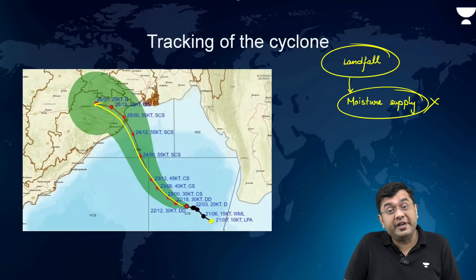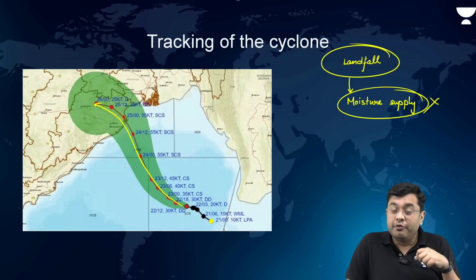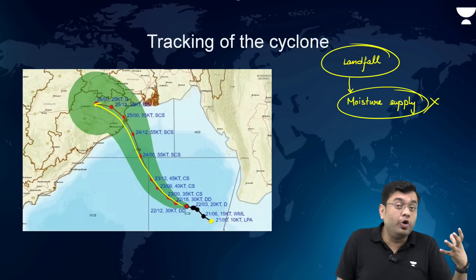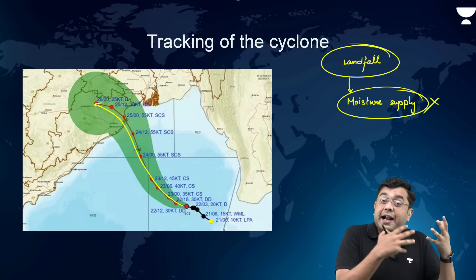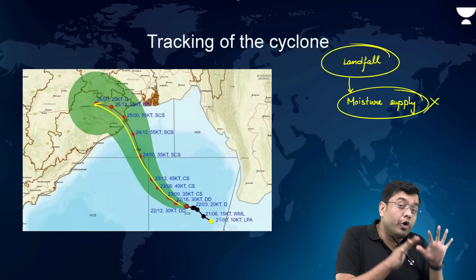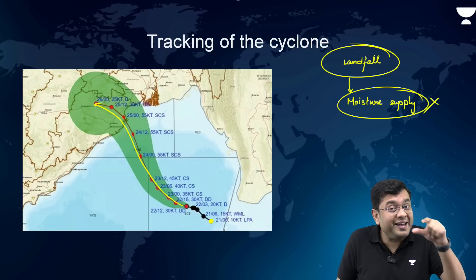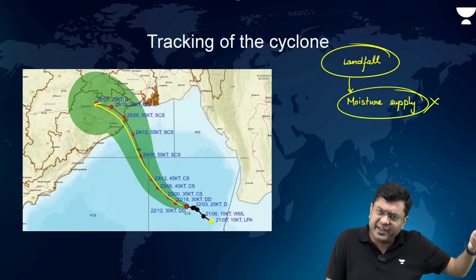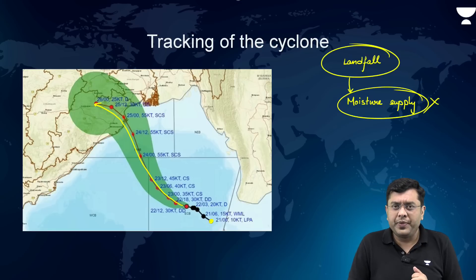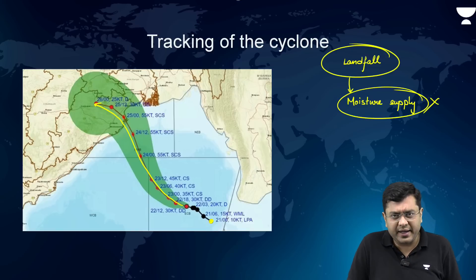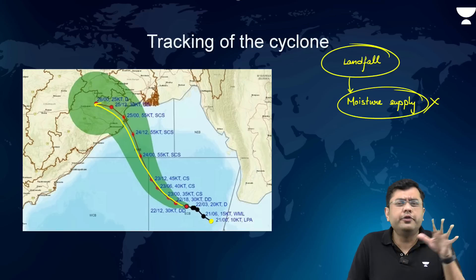However, that is not always the case. There have been certain instances — for example Cyclone Titli and Cyclone Tauktae — where, when these cyclones hit the land, the land had already received enough rainfall prior to that, providing moisture availability. So in very rare cases, when the land has got enough moisture due to significant rainfall prior to landfall, the cyclone can intensify further. But those are rare cases. Cyclone Dana is not one of them — it is expected to make landfall and weaken thereafter.